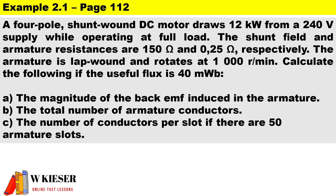This is an example taken from our textbook — example 2.1 — for a DC motor. It is a four-pole shunt wound DC motor that draws 12 kilowatts from a 240 volt supply while operating at full load. The shunt field and armature resistances are 150 ohms and 0.25 ohms respectively. The armature is lap wound and rotates at 1000 revs per minute.